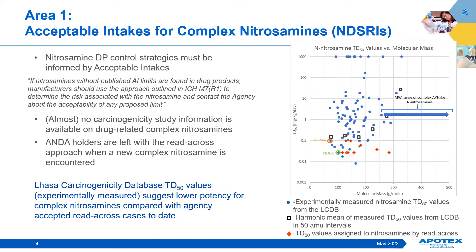This is an eminently reasonable requirement of the guidance. However, it is very challenging to implement. Unlike the simple nitrosamines which have published limits, almost no complex nitrosamines have been subjected to animal carcinogenicity studies, and certainly none for all the newly discovered nitrosamines in drug products in the last couple of years. So this leaves ANDA holders with only toxicological read-across to arrive at AIs for complex nitrosamines they encounter in their drug products. Based on public domain information, what does the current picture look like with read-across vis-a-vis empirical data? The graph on this slide gives that picture.